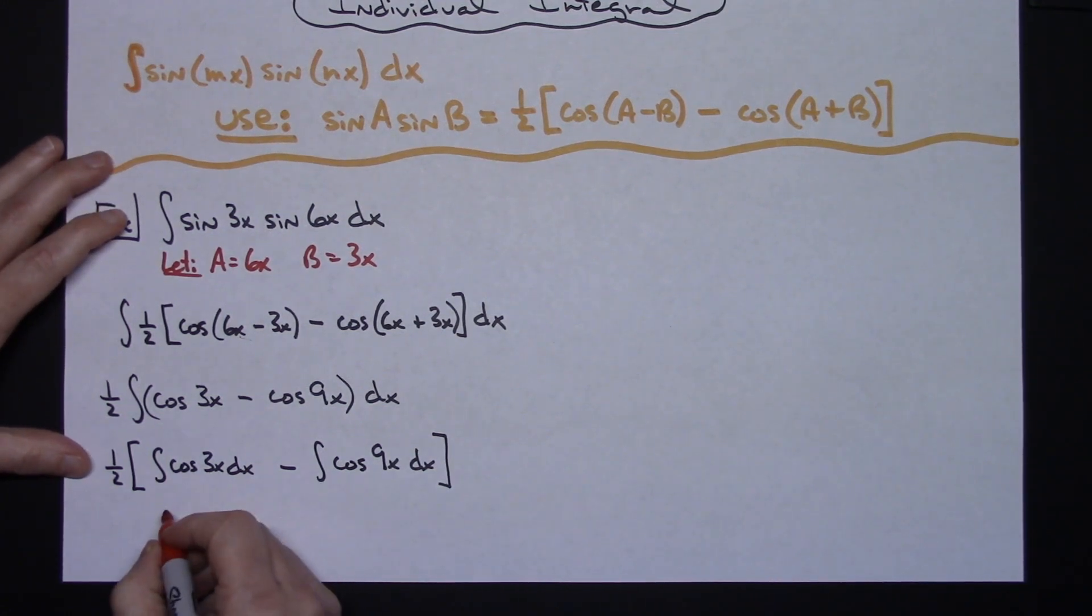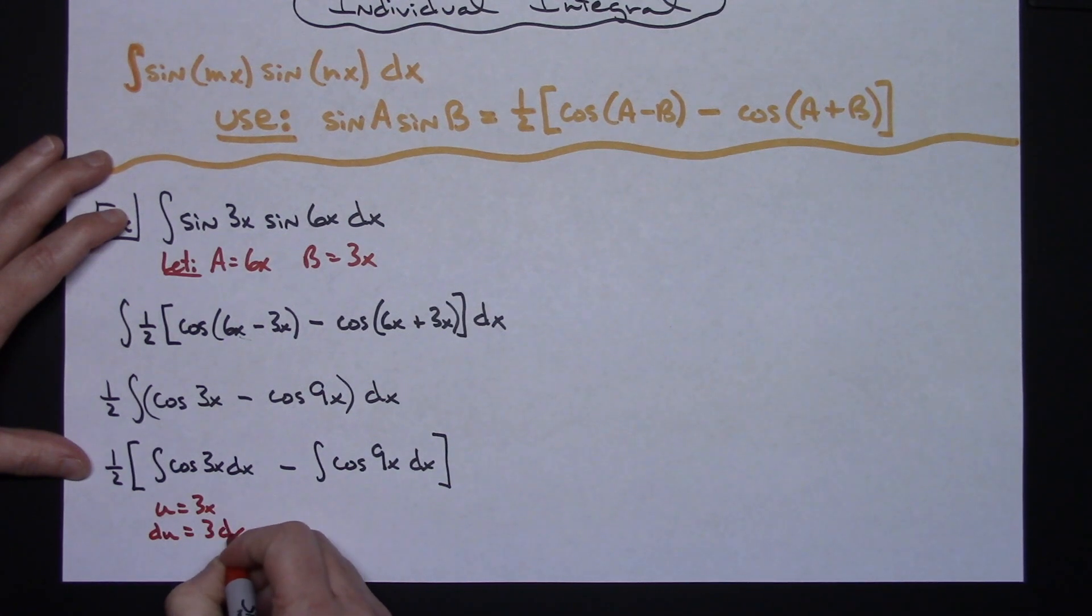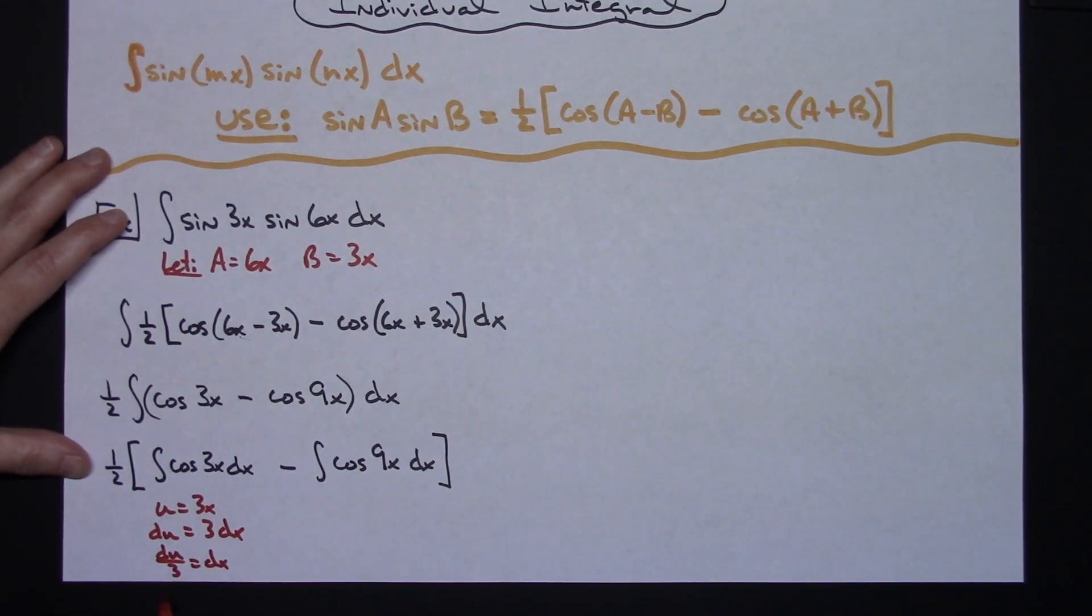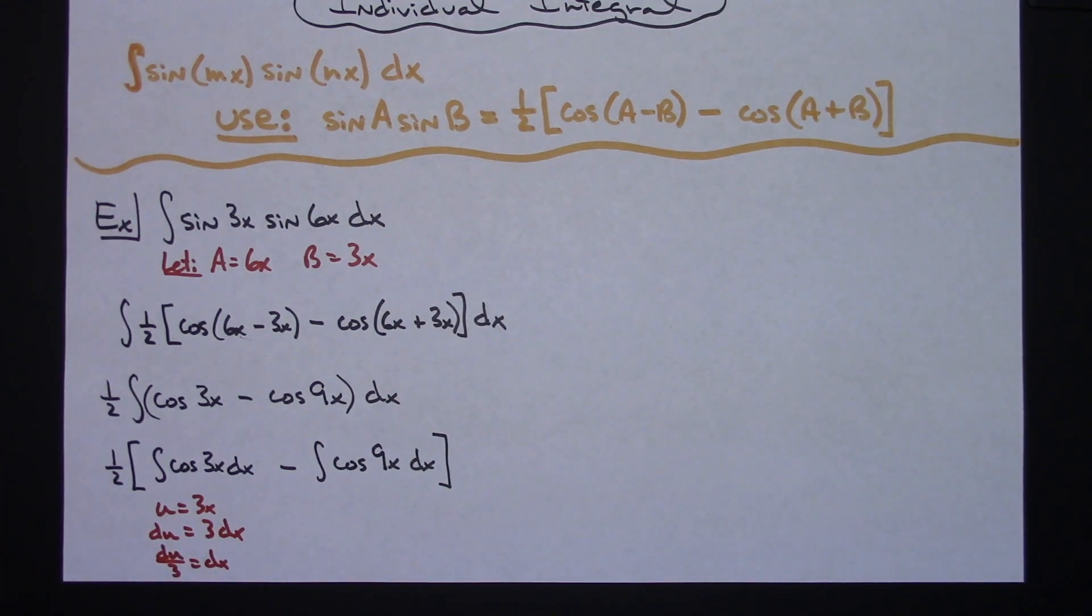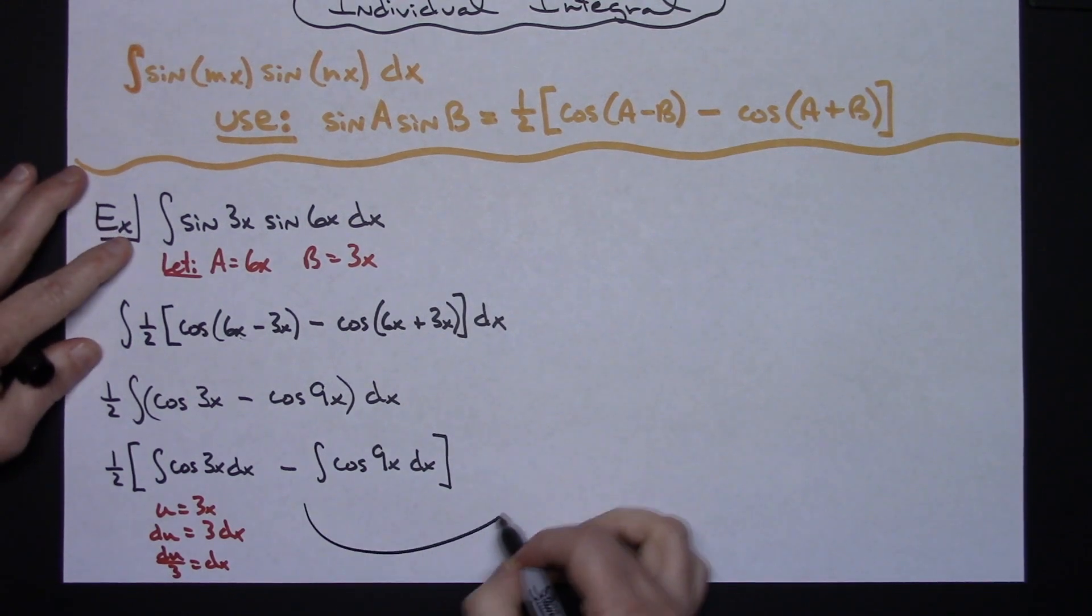But this would be just a straight u substitution, where I would let u equal my 3x. When I take a derivative there, I would have a du is equal to 3dx, and then I divide both sides by that 3, so I'd have a du over 3 equals dx. So basically, I'm going to be pulling out a one third right there out of that integral. So showing that hopefully is going to be enough to get you through that integral.